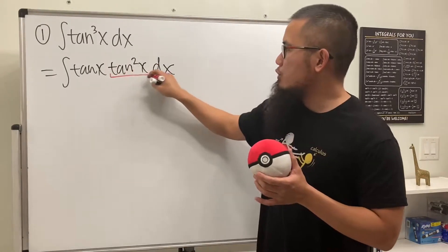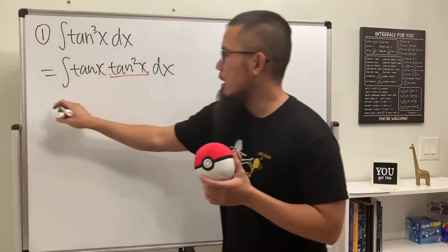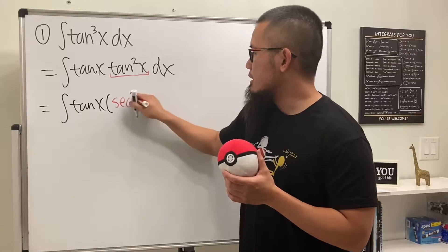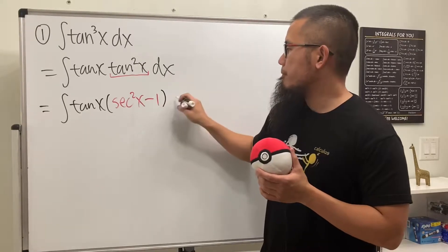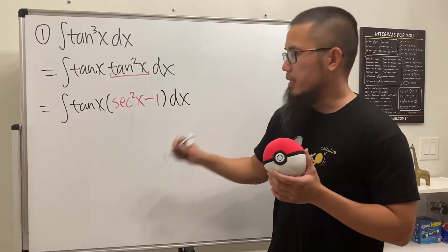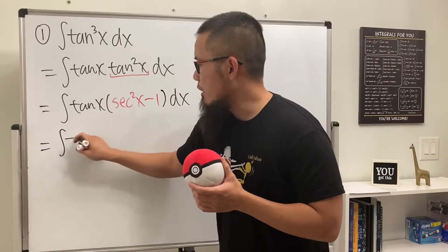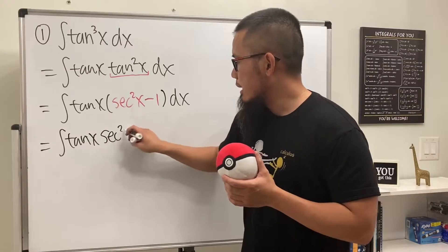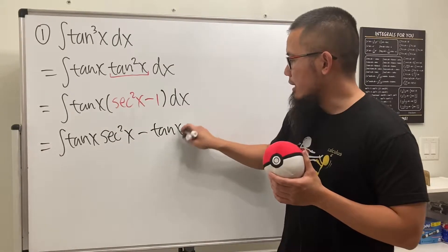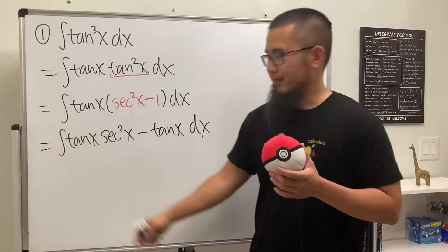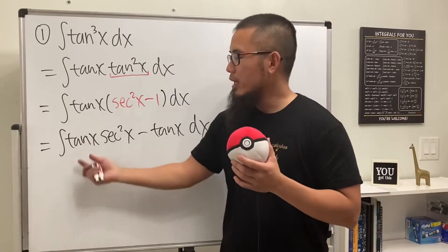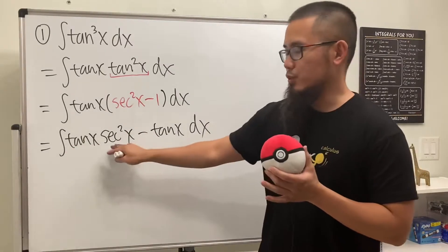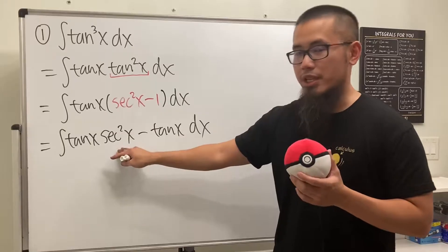Here we have tangent squared x, which we can replace using the identity, rewriting it as tangent x times (secant squared x minus 1). When we multiply in, we get the integral of tangent x times secant squared x, minus tangent x dx. We can do a u-sub: let u equal tangent x, and then we have secant squared x right here to help us out.